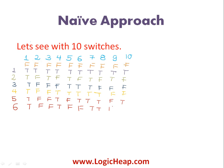After the sixth pass the states are: true, true, false, true. In the seventh pass, switch 7 is toggled from true to false. After the seventh pass: false, false, true, false, false. In the eighth pass: T, F, F, T, F, F, F, false, false, true.